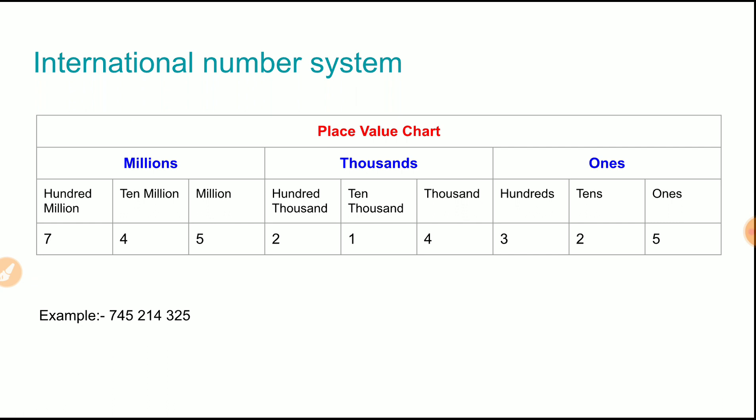We will start with million. Now in millions it consists of three places. So all three digits written in the million column will be read out all together: 745 million, 214 thousand,